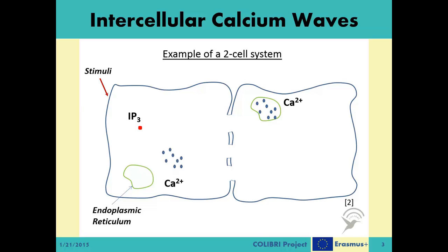Some of the IP3 molecules reach the IP3-sensitive receptors at the membrane of the organelle called the endoplasmic reticulum, or ER for short. The ER stores a high level of calcium ions, and this reception triggers the organelle to release these ions to the cytosol. After some time, these ions are pumped back inside the ER organelle, and the cytosolic calcium concentration returns to its normal values. In an ICW system, this cytosolic calcium ion concentration is considered as a time-varying signal representing the message.